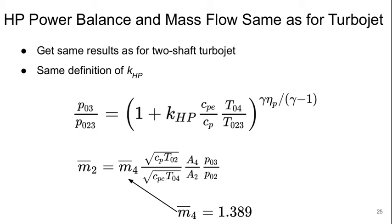If we assume constant polytropic efficiency, then the pressure and temperature ratios across both turbines are, again, just fixed by geometry. And then we can do high-pressure shaft power balance and mass flow considerations in exactly the same way as for the turbojet, and we get exactly the same results.